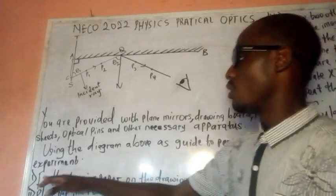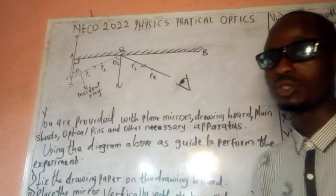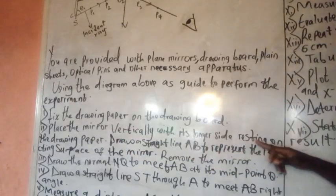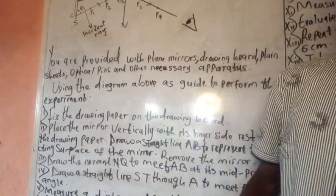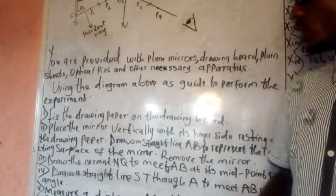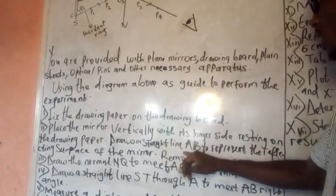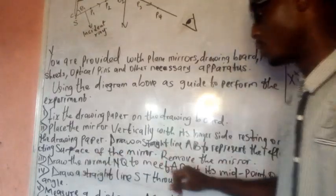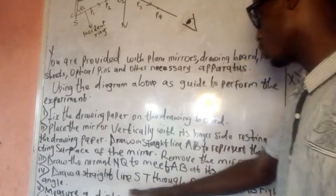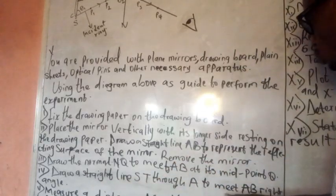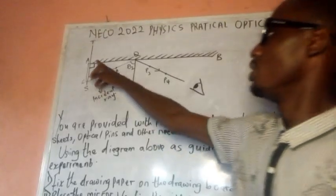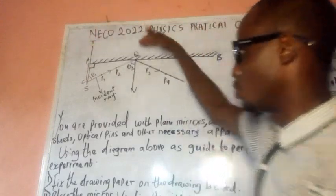Fix the drawing paper on the drawing board using a thumbtack. Then place the mirror vertically with its longer side resting on the drawing paper. Draw a straight line AB to represent the reflecting surface of the mirror, then draw a straight line ST through point A to meet AB at a right angle.